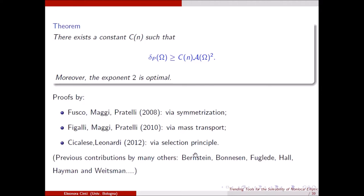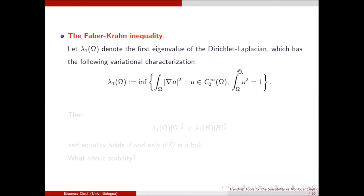As I told you, I gave you just the best, optimal result, but there is quite a large literature on these quantitative estimates. The first results were given by Bernstein, Ganesan, and Puglade, who considered specific situations like omega convex, nearly spherical, or under particular assumptions on omega. Then Hall, Hayman, and Weitsman proved a quantitative isoperimetric inequality for general sets, but only with exponent 4, and they conjectured that the optimal exponent should be 2 — this was called the Hall conjecture, which Fusco, Maggi, and Pratelli solved.